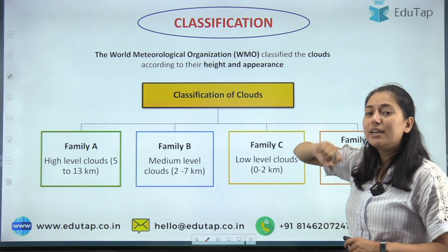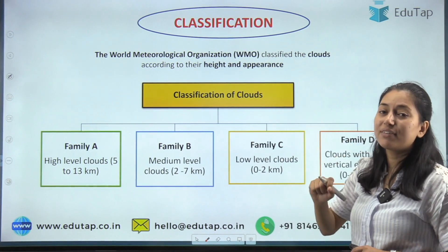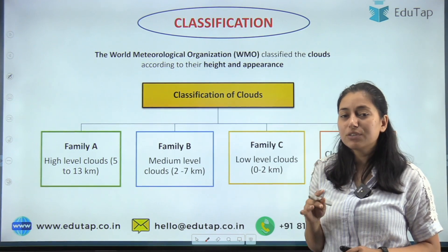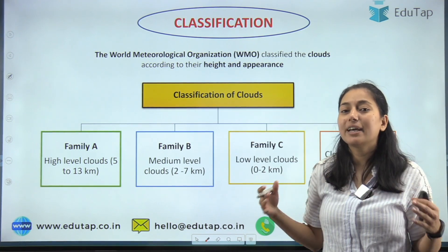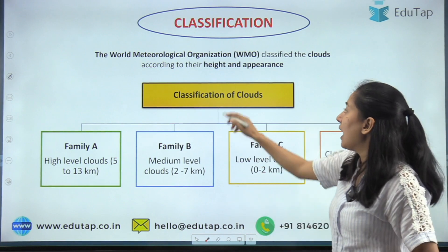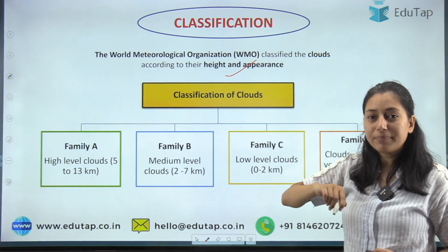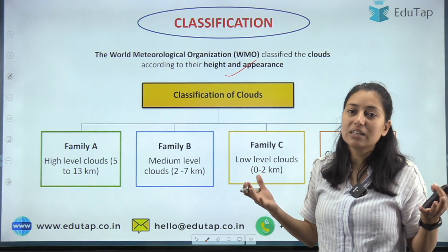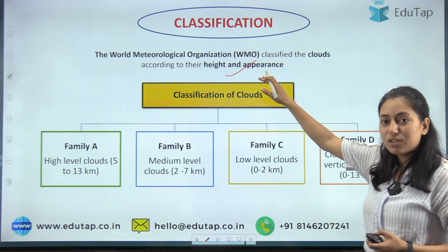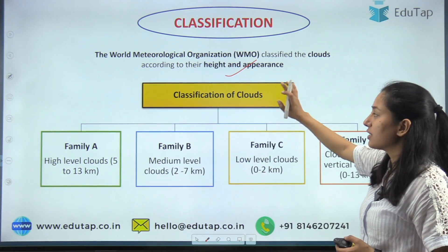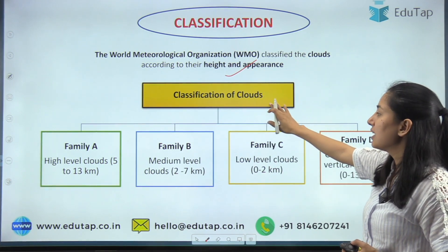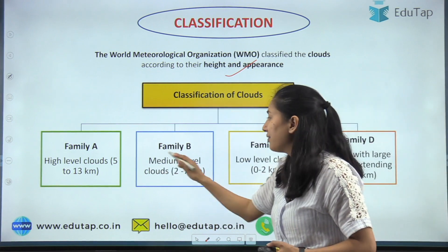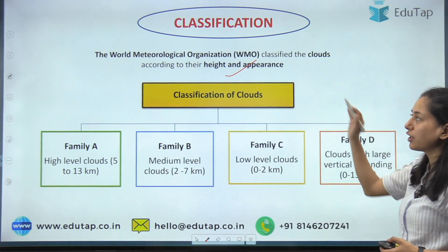The World Meteorological Organization has classified clouds into four different families, and under these four different families we have 10 types of clouds based on height and appearance — how high they are and how they appear. Clouds have been classified into Family A, Family B, Family C, and Family D according to their height.